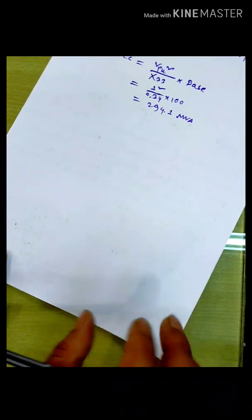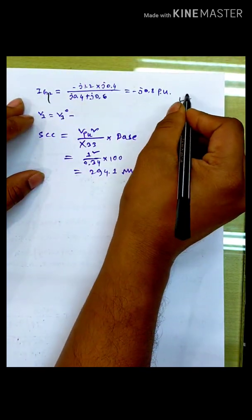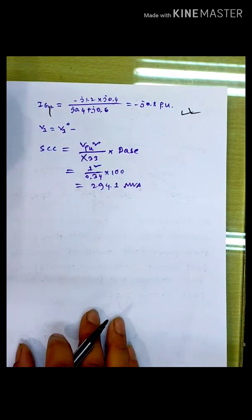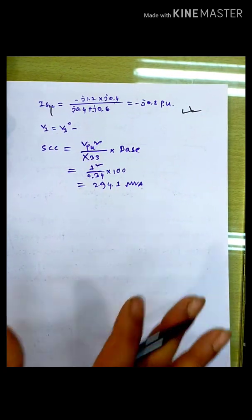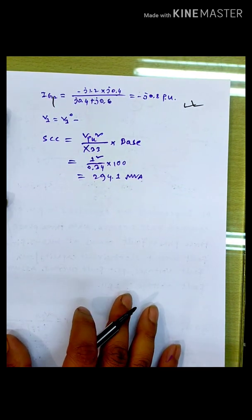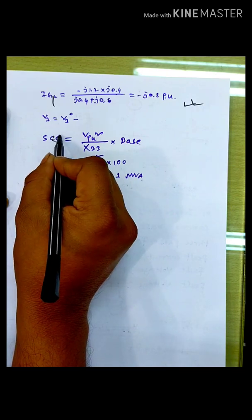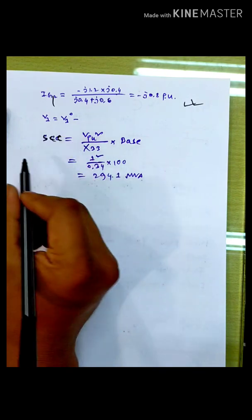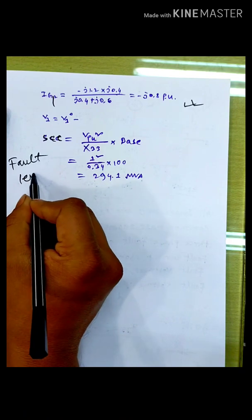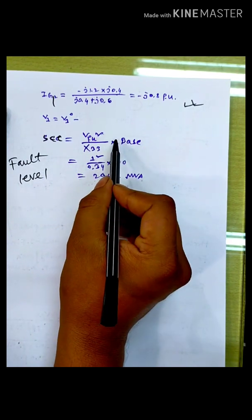We will see the current in the post-fault voltage. We will see the current formula. Short circuit capacity, or short circuit MVA, or fault MVA — we will count the fault level. We will count the value of V2 equals to x33 into base.